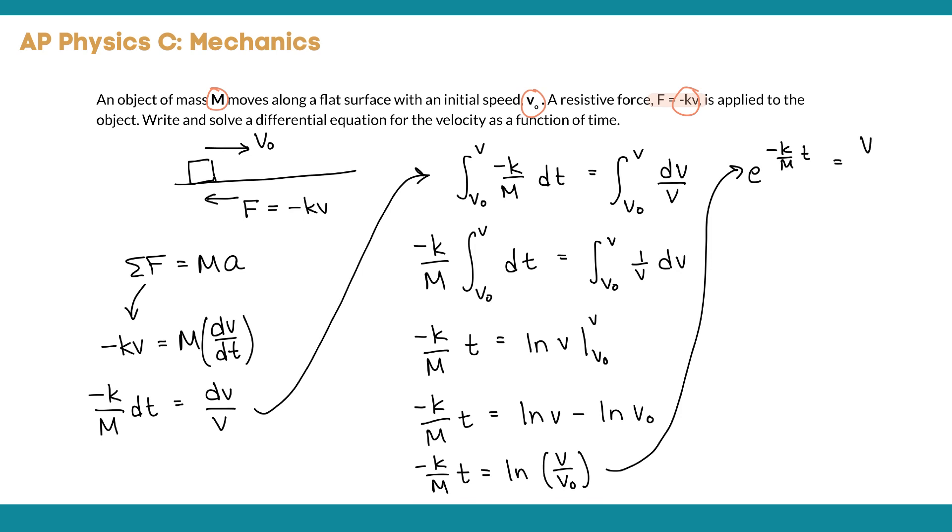When we rearrange that for v, nice and simple, we get v naught times e to the negative kt over m. This v here is the velocity with respect to time, so if we want to rewrite that just to look a little bit more like a function, we can rewrite that as v of t equals v naught e to the negative kt over m. There we have it—our final expression for the velocity as a function of time.